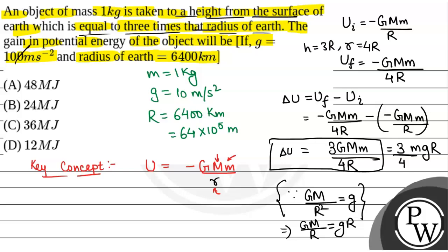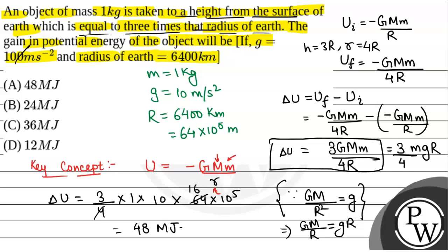Putting the values together: ΔU = (3/4) × m × g × R = (3/4) × 1 × 10 × 6.4 × 10⁶, which gives 48 × 10⁶ J. So the gain in potential energy will be 48 megajoules, which is option A.